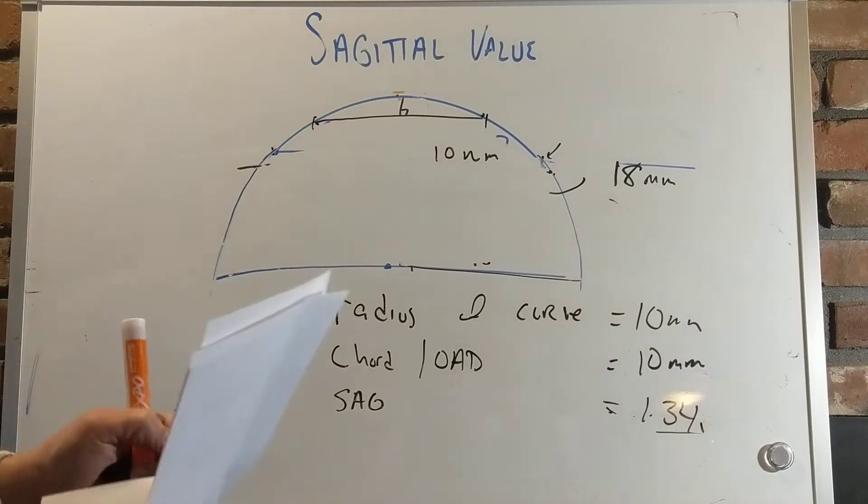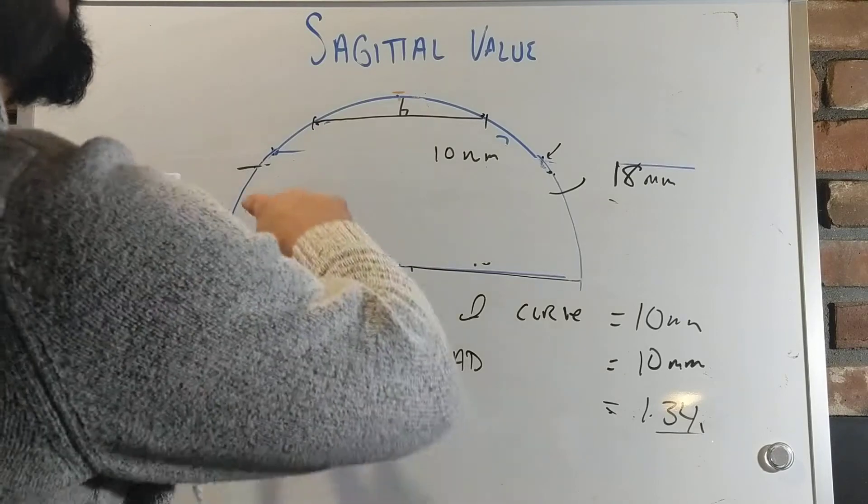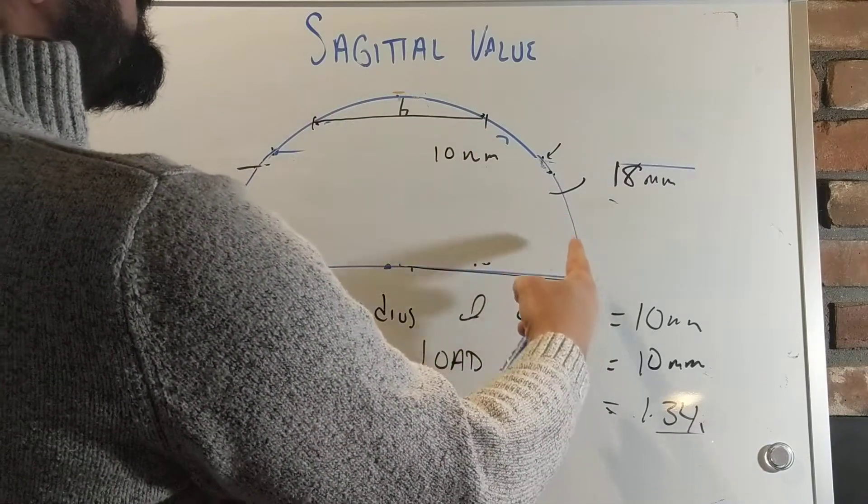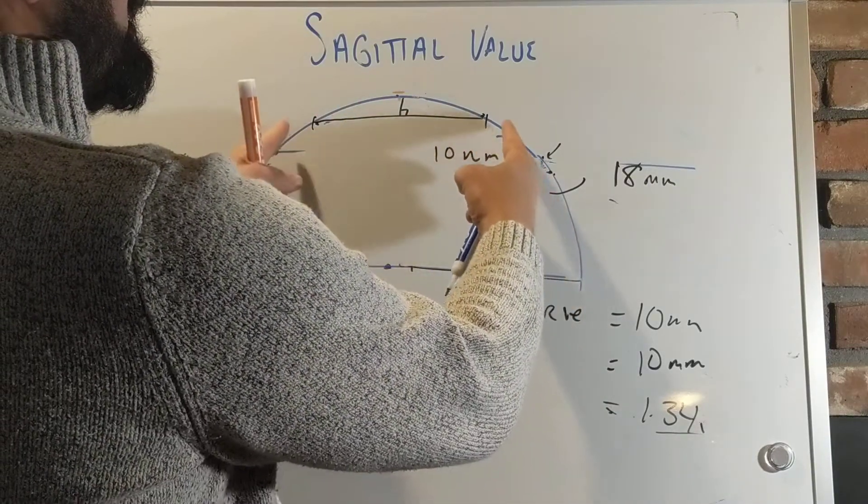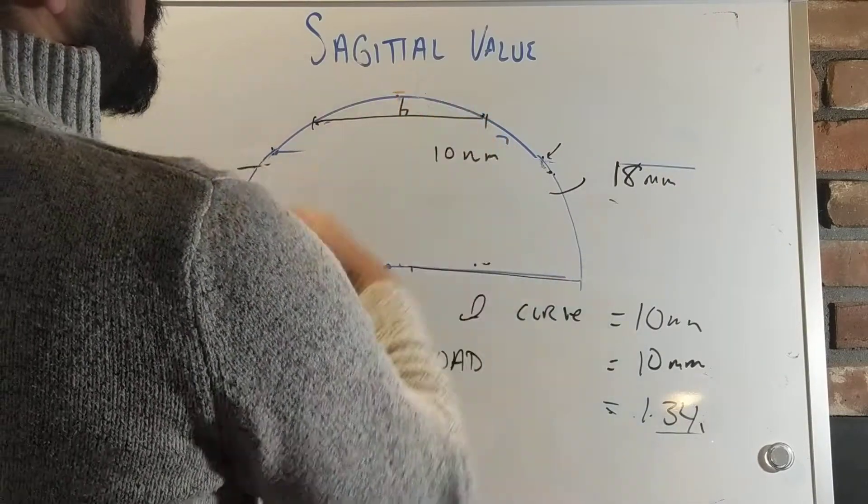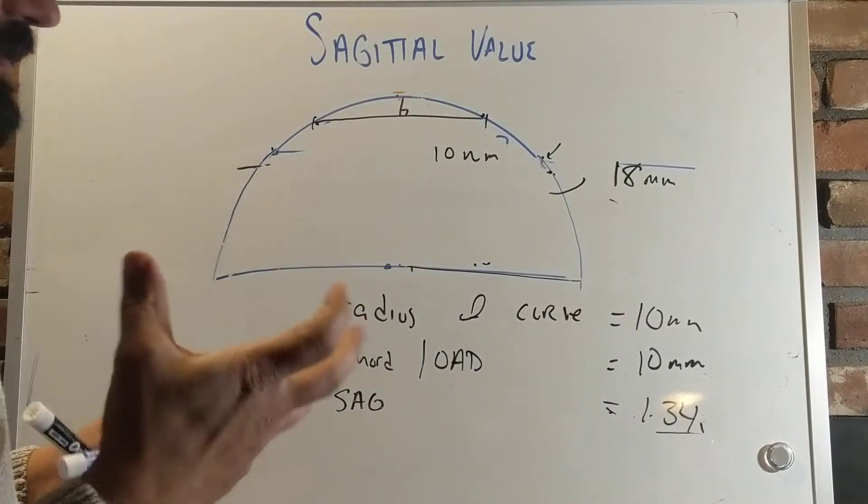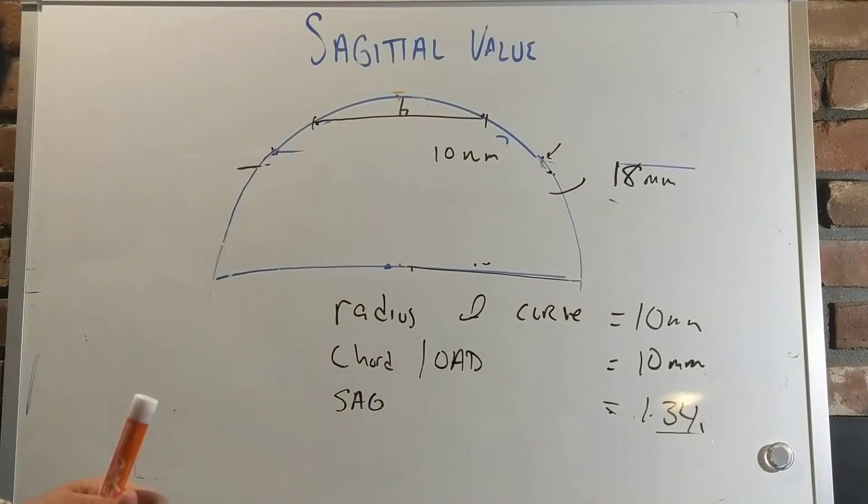Now, this is simply a mathematical way to illustrate, if you have a similar radius of curvature, and you decrease the diameter of the lens that you're using, that sagittal value is going to shrink. The lens is not going to have as much of a suction cup effect. That lens is going to fit flatter.